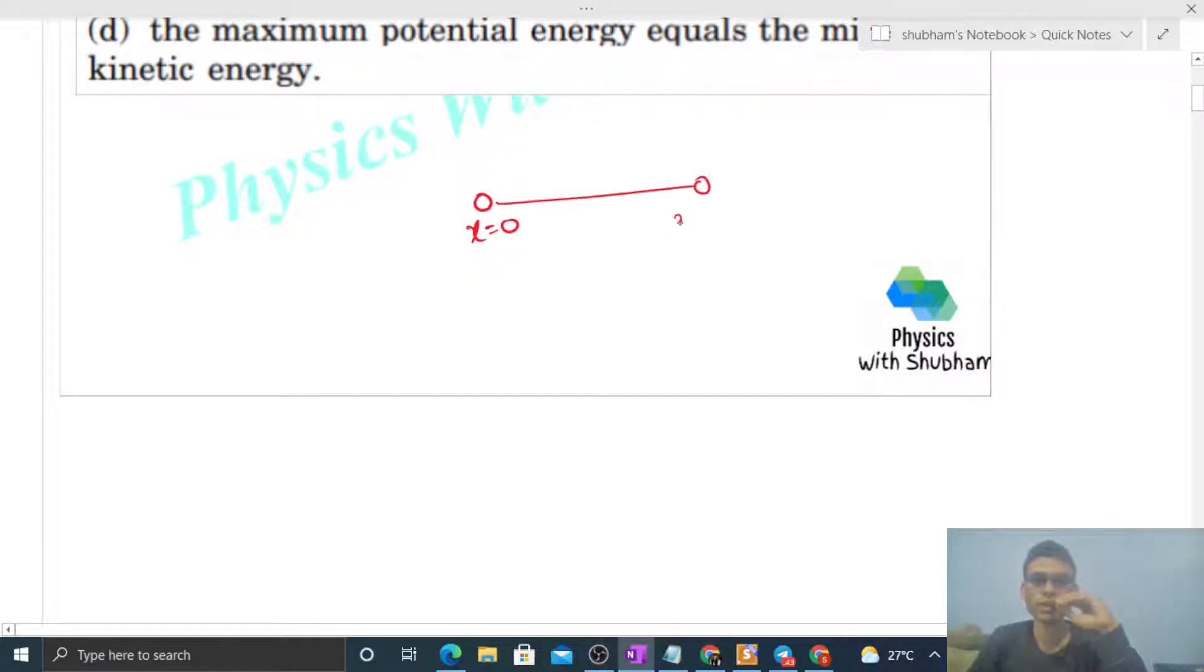x equals zero is the mean position. x equals plus A and x equals minus A. This is the extreme position.